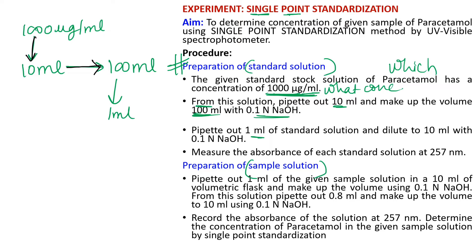Dilute the 1 ml to 10 ml using NaOH, and measure the absorbance of this solution. The absorbance of the standard is 0.518 — let's call this A-standard. We also need to know C-standard, which is the concentration of this 10 ml solution, so we calculate it using C1V1 = C2V2.